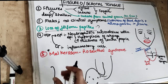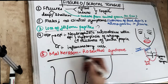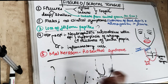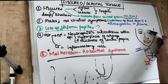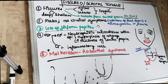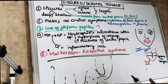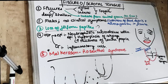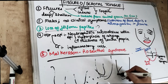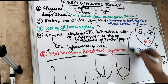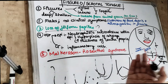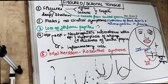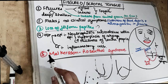The most important point is that fissured tongue is usually associated with Melkerson-Rosenthal syndrome. This syndrome involves facial paralysis, swelling of the upper lip, and cheilitis granulomatosa. As illustrated, there is facial paralysis with thick upper lips, and grooves are seen in the tongue. So Melkerson-Rosenthal syndrome consists of facial paralysis, cheilitis granulomatosa, and swelling of the upper lip — and remember, fissured or scrotal tongue is associated with this syndrome.